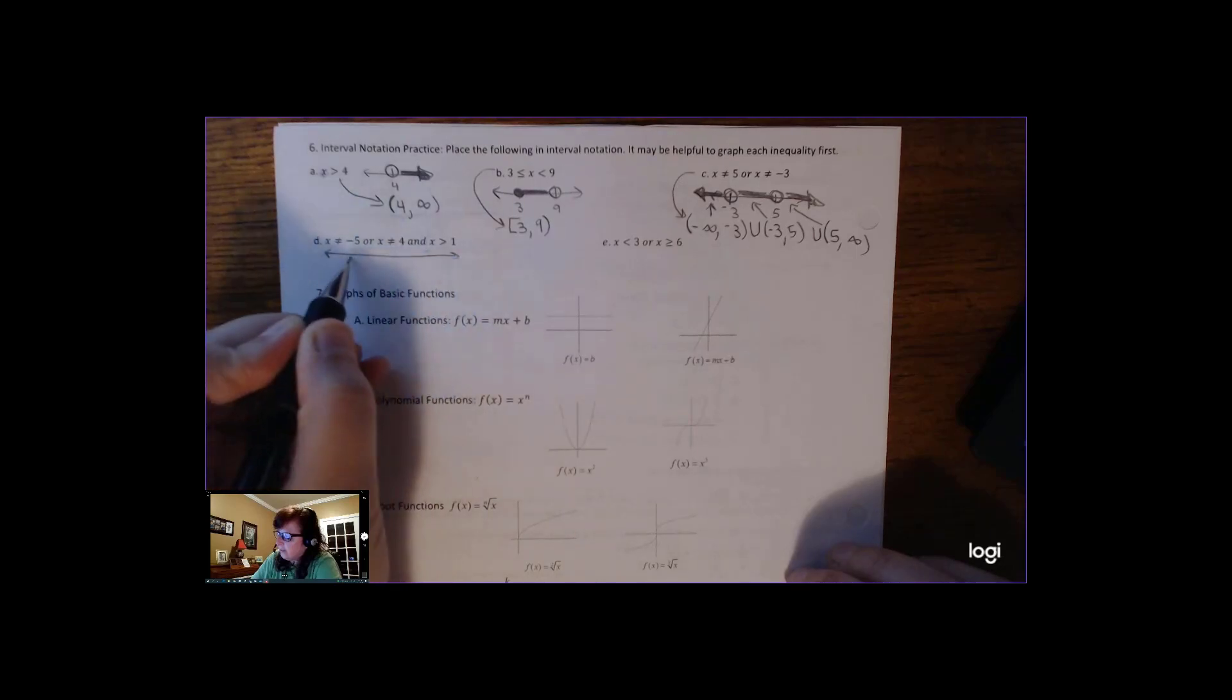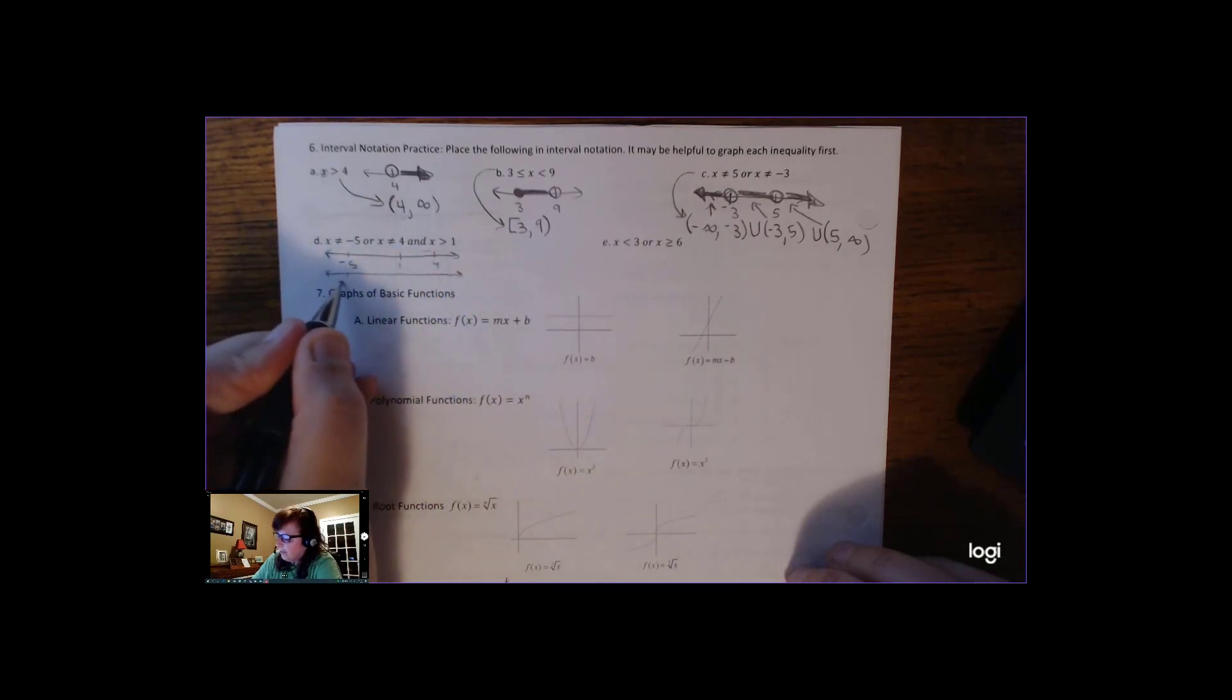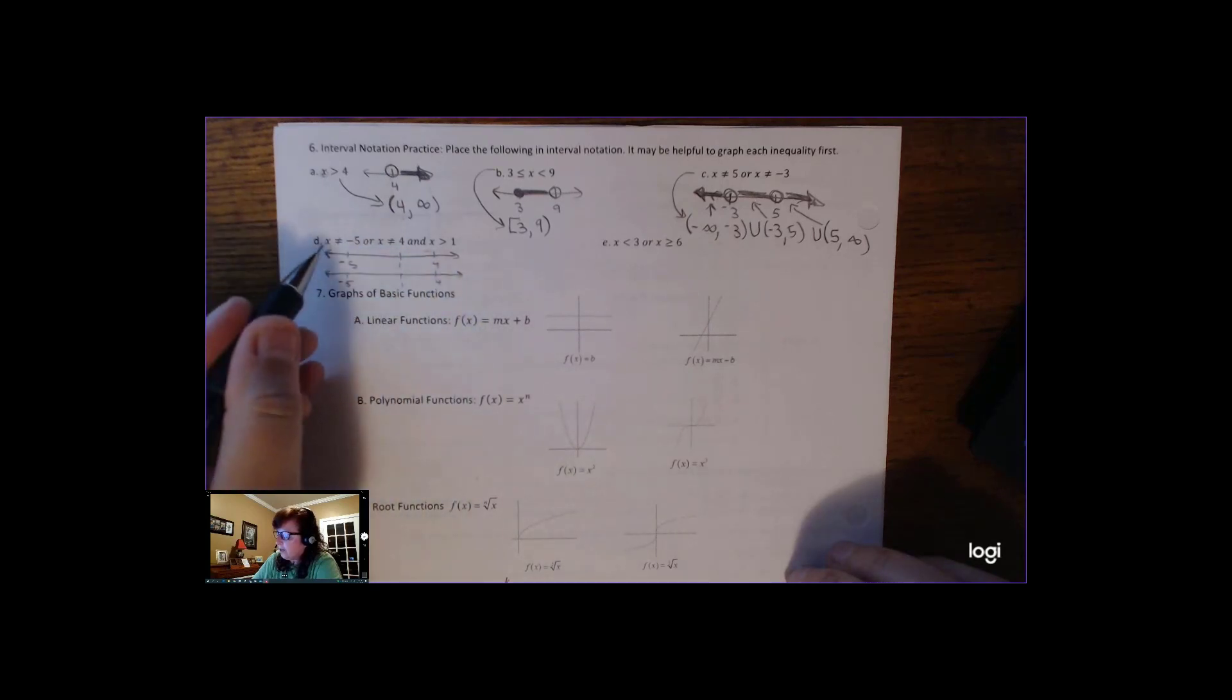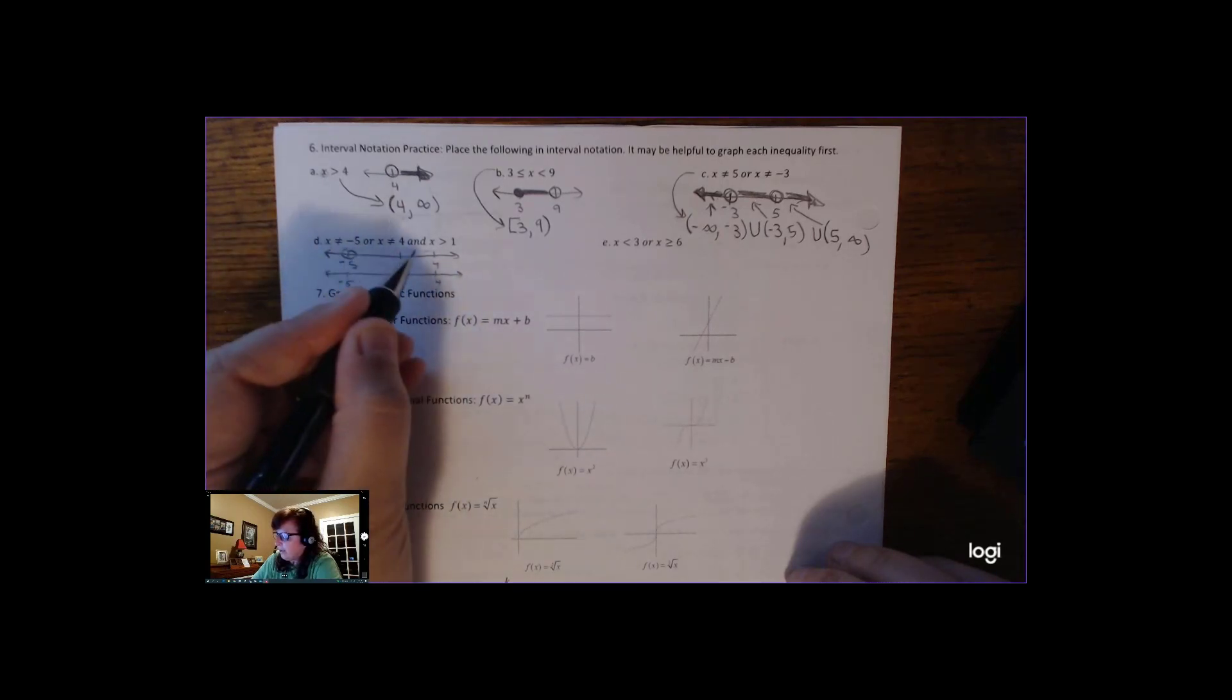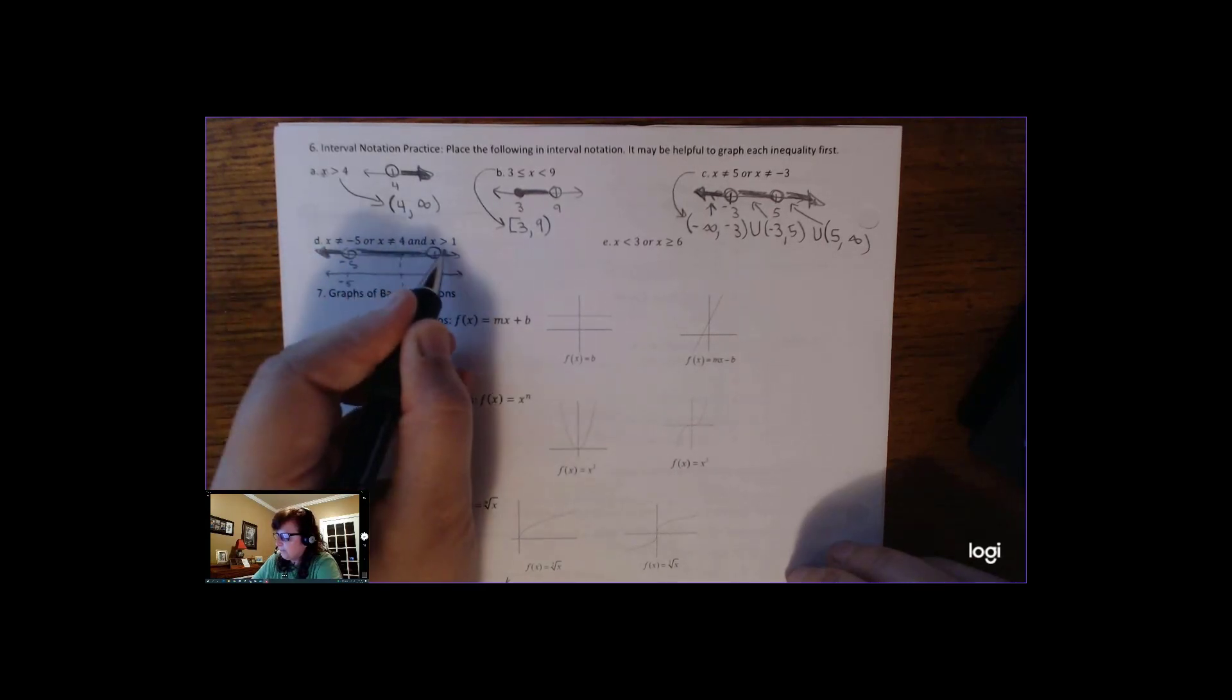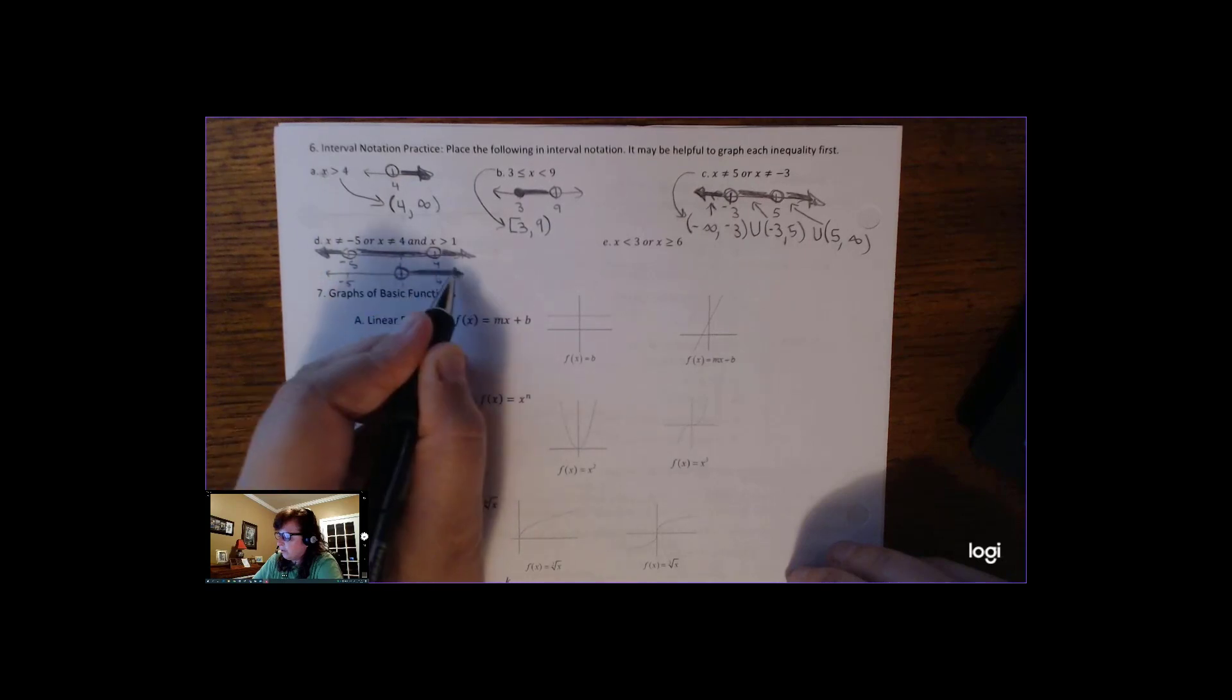First, we got negative 5 and 1 and 4, and then here, negative 5, 1, and 4. So if I graph x can't be negative 5 or x can't be 4, it looks like that graph we just did earlier. And then if I graph x is greater than 1, that looks like this, open hole and to the right.